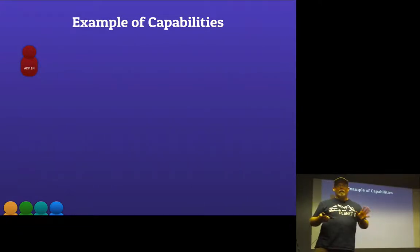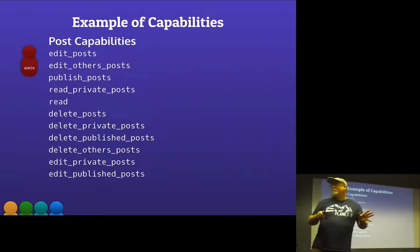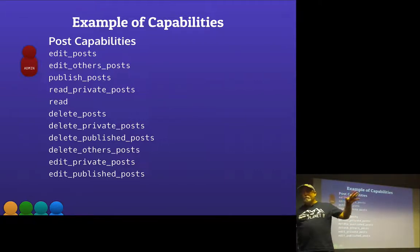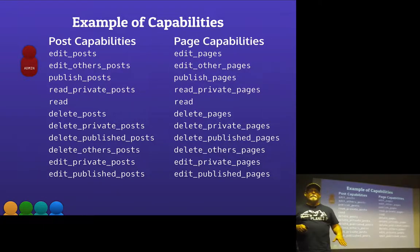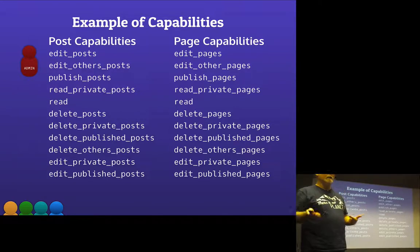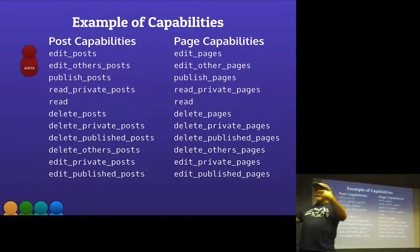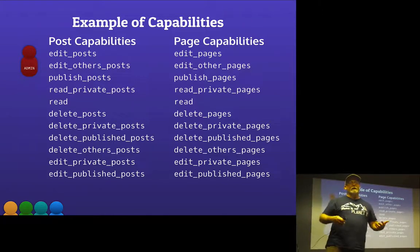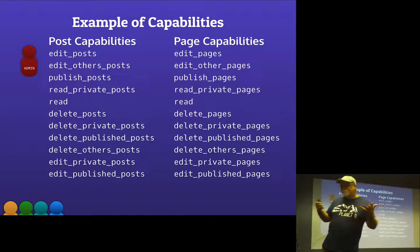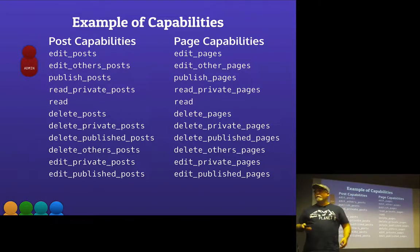These capabilities actually look in WordPress like this — edit posts, edit others' posts, publish posts, read private posts, read, delete posts, delete private posts, delete published posts, delete others' posts, edit private posts, edit published posts — and then the same thing with pages. This is the code-based version of capabilities. It is really confusing, and it takes a lot of reading. Most of us aren't writing plugins — we're actually working with WordPress and dealing with content restrictions.